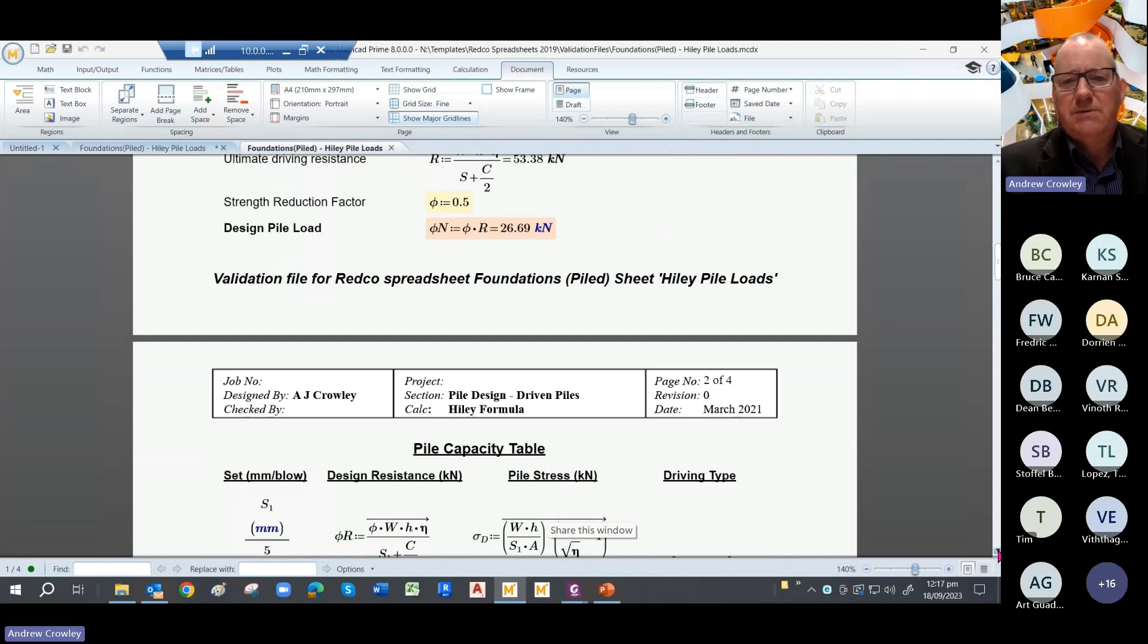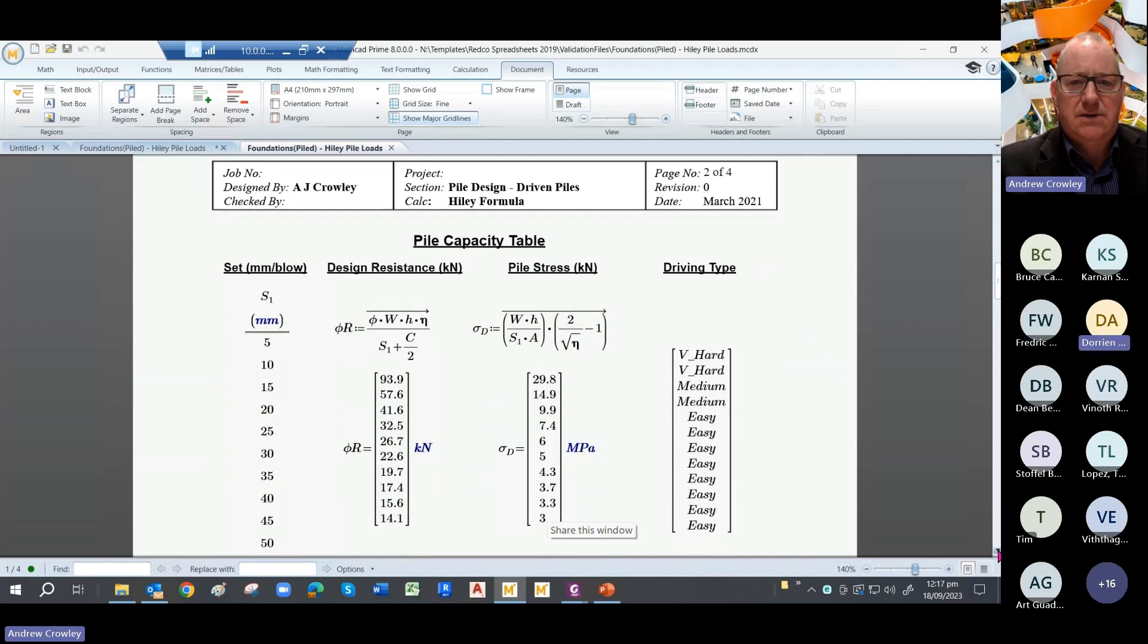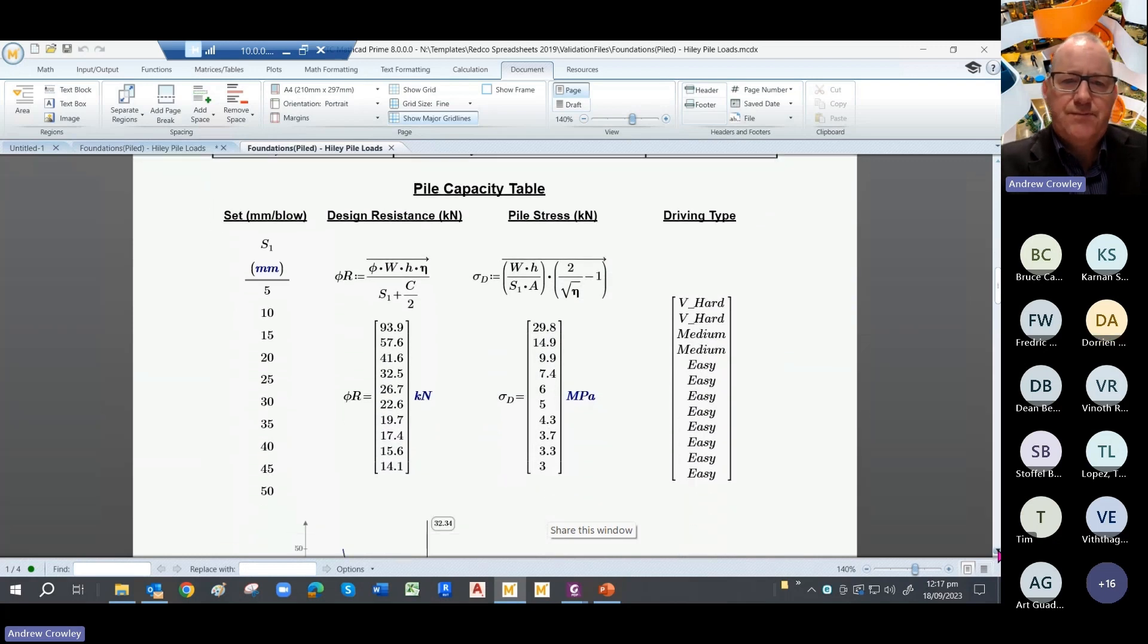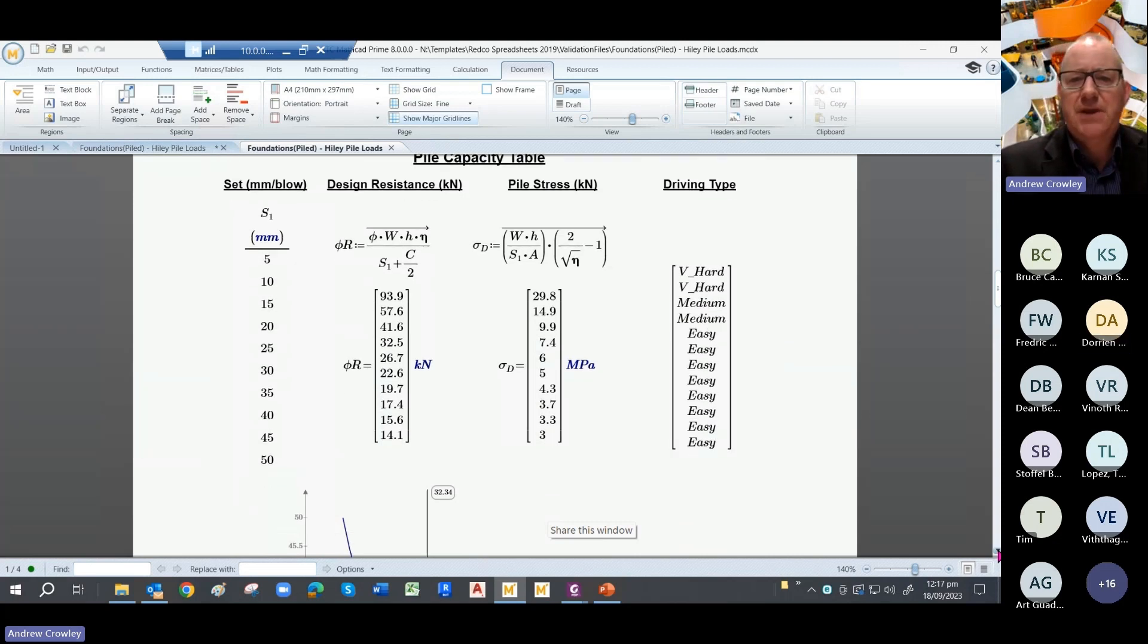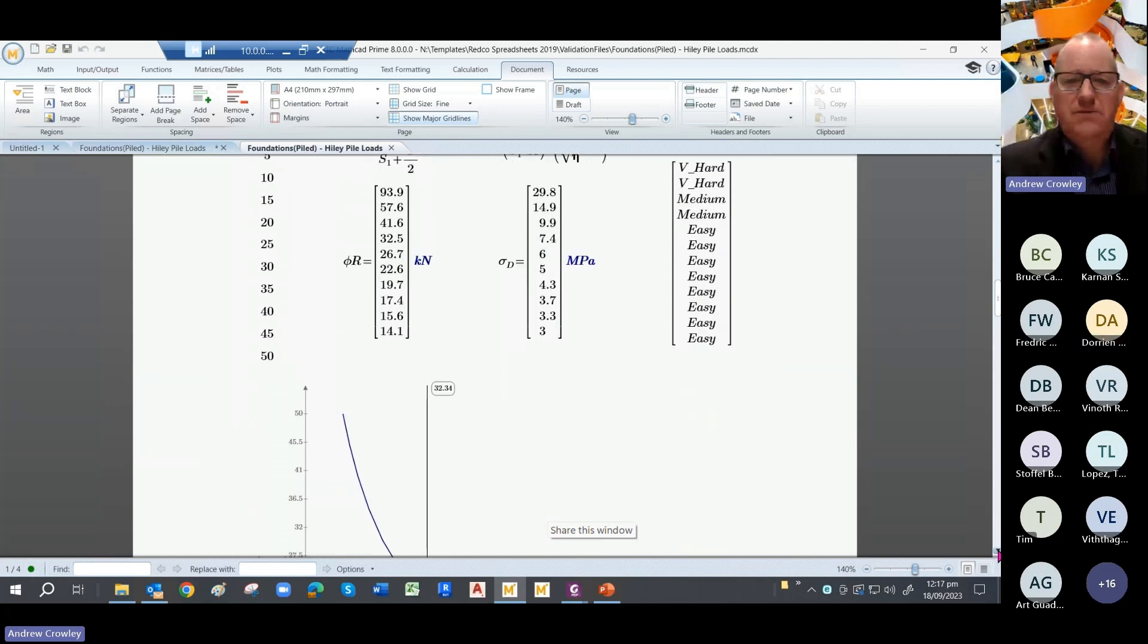Now you would think you'd be able to produce a pile capacity table simply from that, and so we can use in this case the table to produce an array of values with design resistance and the pile stresses. Now the reason I've put in the pile stresses is to show that the stress in the pile changes with the set. And so at the smaller sets, the driving goes from easy to medium, which means your table there is really only valid in the easy range.